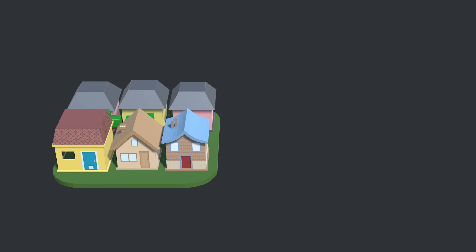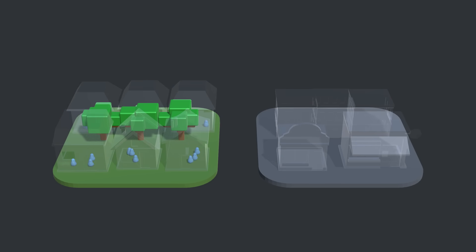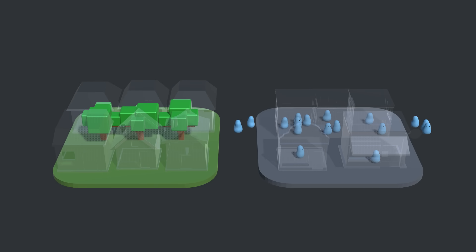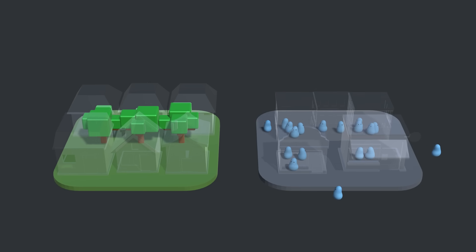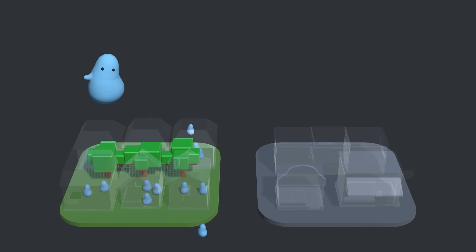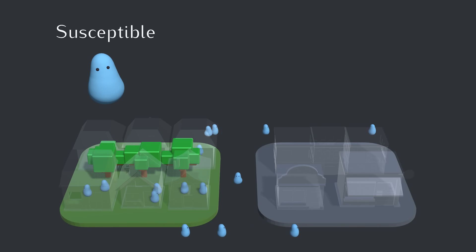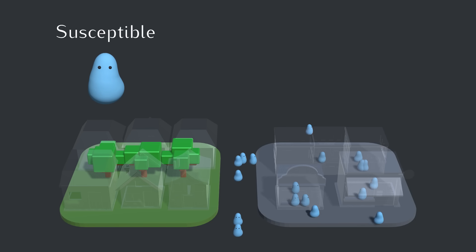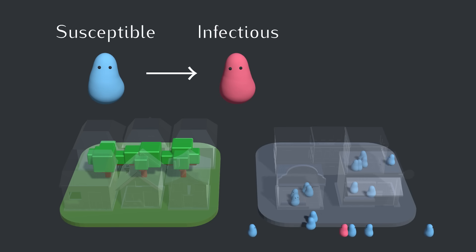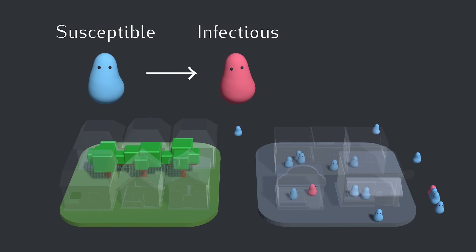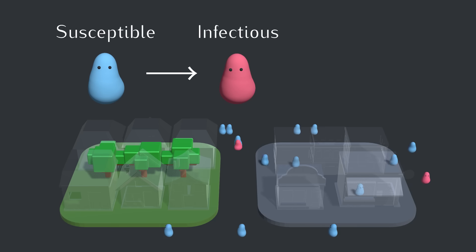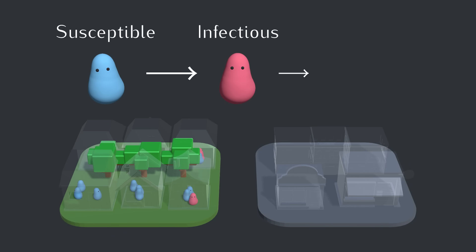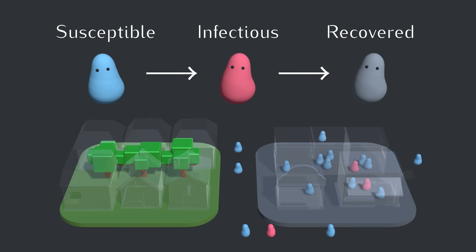This city has two kinds of locations: homes and non-homes. Three blobs live in each home, and each day each blob will go to up to three different places near where it lives, and then return home at the end of the day. The disease will have three different states. Blobs start out blue in the susceptible state. If a blob catches the disease, it becomes infectious and can then infect other blobs that are in the same room. Blobs stay infectious for two days, and then they enter the recovered state, turning gray.